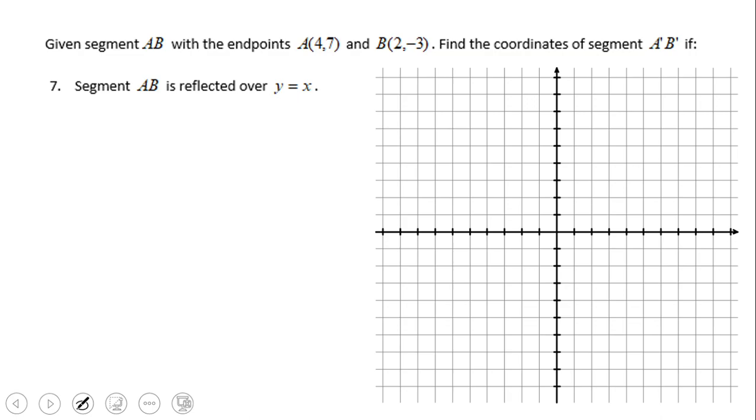We have the segment AB with endpoints A at (4, 7) and B at (2, -3). We want to reflect it over y equals x.